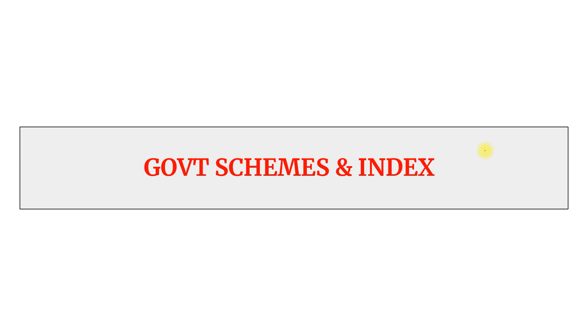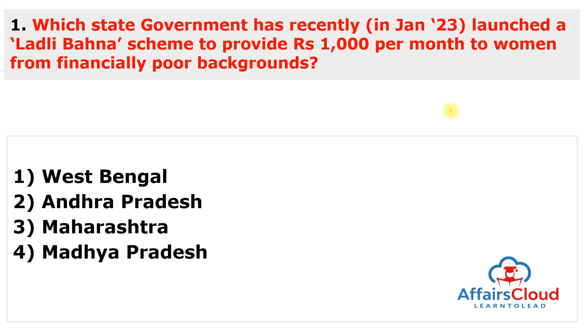Let's start the February month's topic-wise current affairs. Today's topics are: one — government schemes, and two — index. Two questions under government schemes and four under the index. The first topic is government schemes.